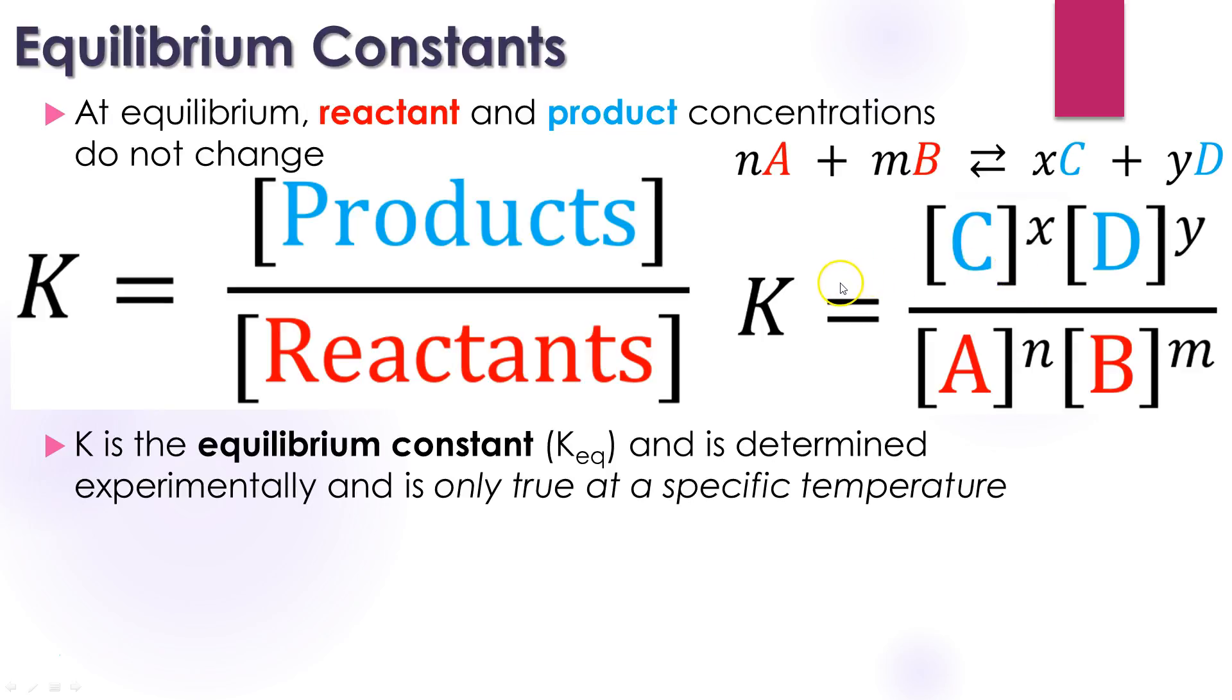The way we would write out this equilibrium constant is with the products over the reactants. And you'll notice that I'm not going to be adding them together. I'm going to be multiplying them. And that coefficient is now going to become an exponent. So I'm going to start with my products here. I'm going to take my compound C and I'm going to raise it to the xth power. And my compound D, multiplying against that, is going to be raised to the yth power. And that is going to be divided by my reactants, the things that I start with. A is going to be to the nth power and B is going to be to the mth power. Here's my products over the reactants. And this is how we get our equilibrium constant, which allows us to fill in any missing variables that we might have.